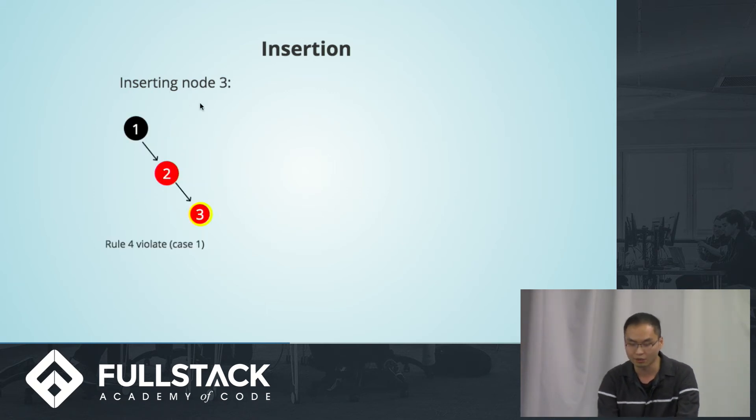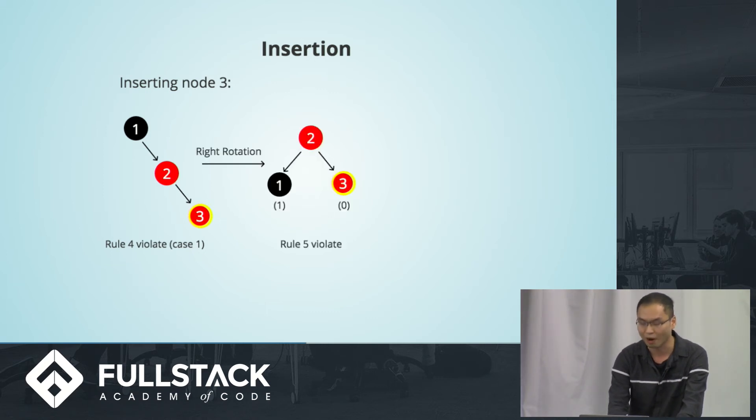Next, inserting node 3. This is probably getting interesting. This one is actually the invalid case you saw before. How do you validate this tree? You can just do a very simple left-right rotation and then swap the color. And then you end up to be a valid red-black tree.